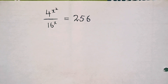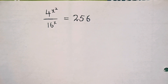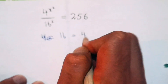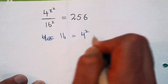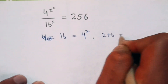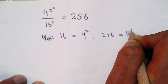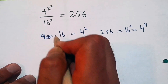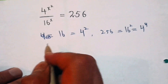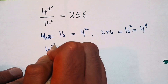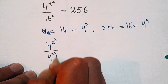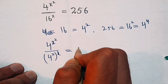Hello and welcome back to Think and Derive. We have 4 power x square over 16 power x equal 256. First of all, 16 is 4 squared and 256 is 16 squared, that is 4 power 4. So this equation will become 4 power x square over 4 square power x equal to 4 power 4.